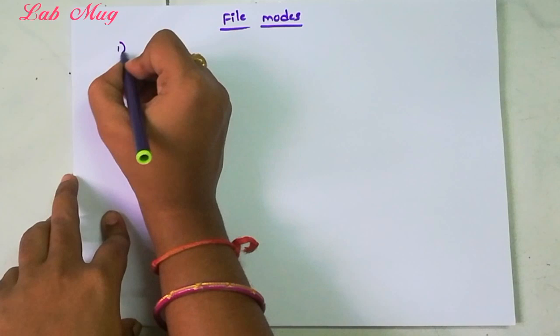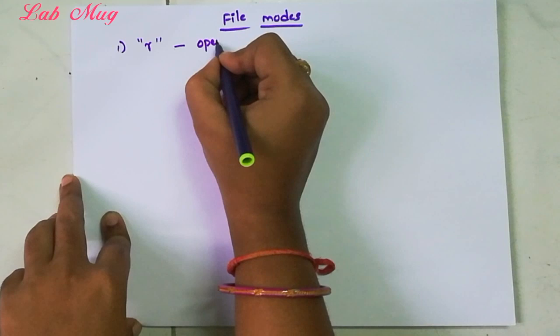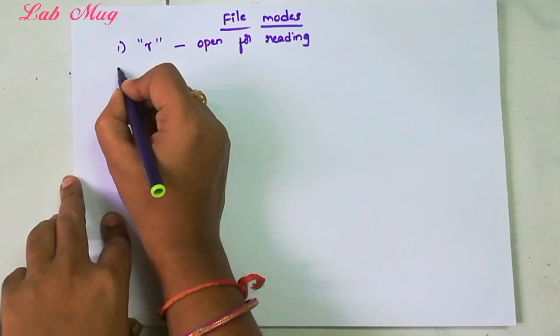So file modes - the first file mode is R. This is open for reading. We use this file mode when we need to read the file only for reading purpose. The first file mode is R mode.